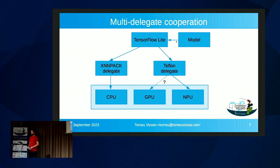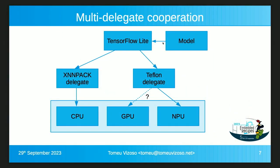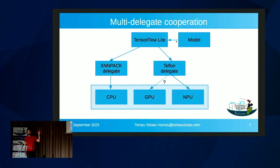To illustrate a bit how this could work in practice with this delegate I'm writing: TensorFlow Lite loads a model from the filesystem, there's a series of operations, and some of them will be able to go to my delegate, which I call Tiflon. That will currently be executing those operations it knows about to the NPU. The others, TensorFlow Lite will run on the CPU, using a delegate which is part of TensorFlow Lite optimized for ARM. As a hint for the future, maybe Tiflon could run some operations which the NPU cannot run on the GPU, or maybe on the programmable core which is on the NPU.